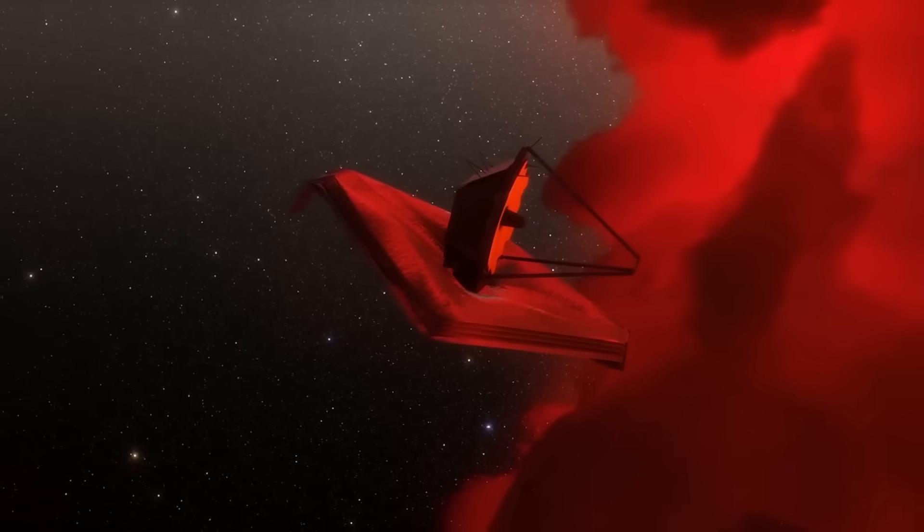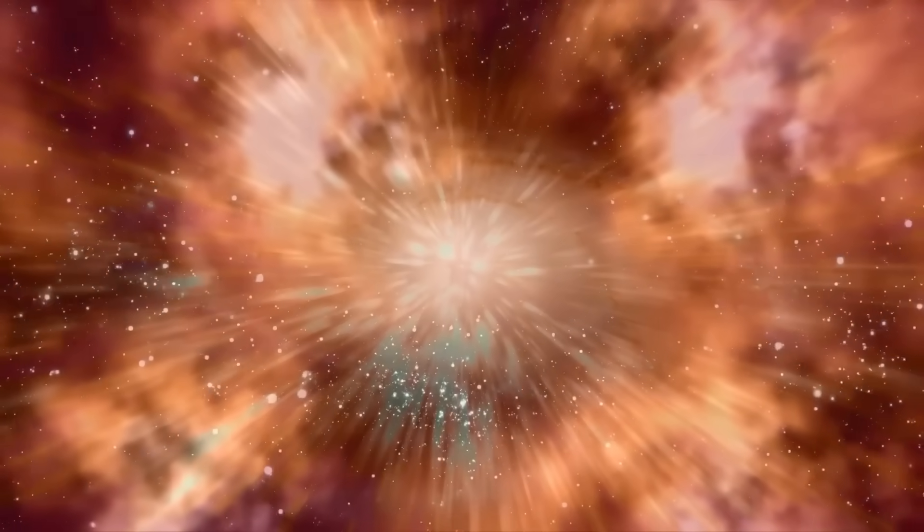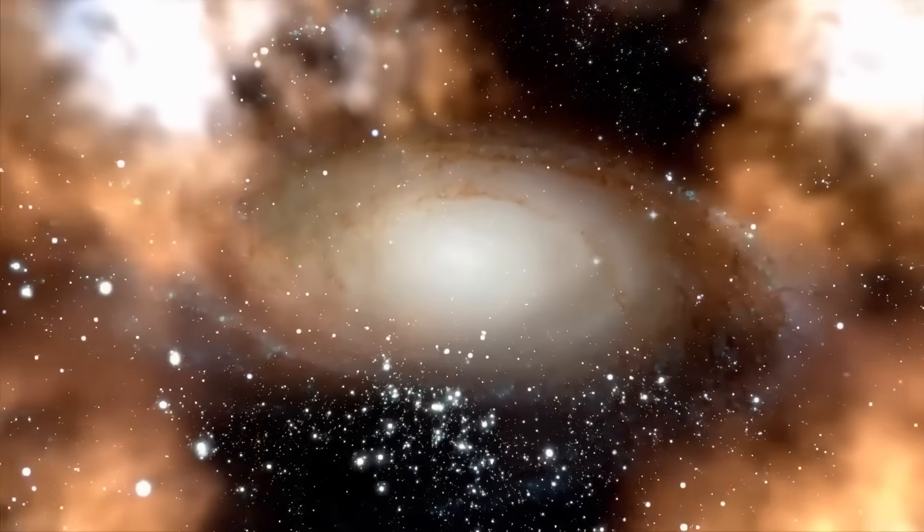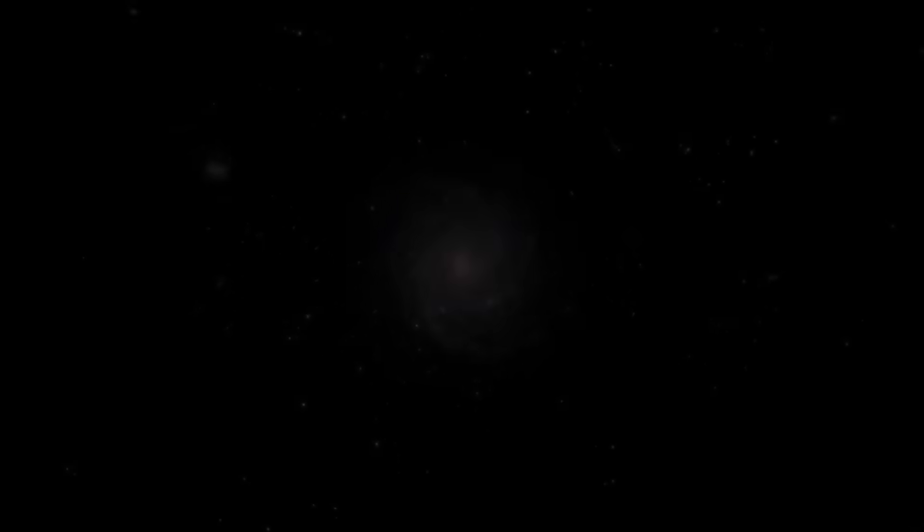The first crack in the foundation came when James Webb began returning ultra deep field images—photos of the earliest moments of our universe. According to the Big Bang theory, the galaxies that formed shortly after the origin of the cosmos should be small, chaotic, and faint. But what James Webb saw was the exact opposite.